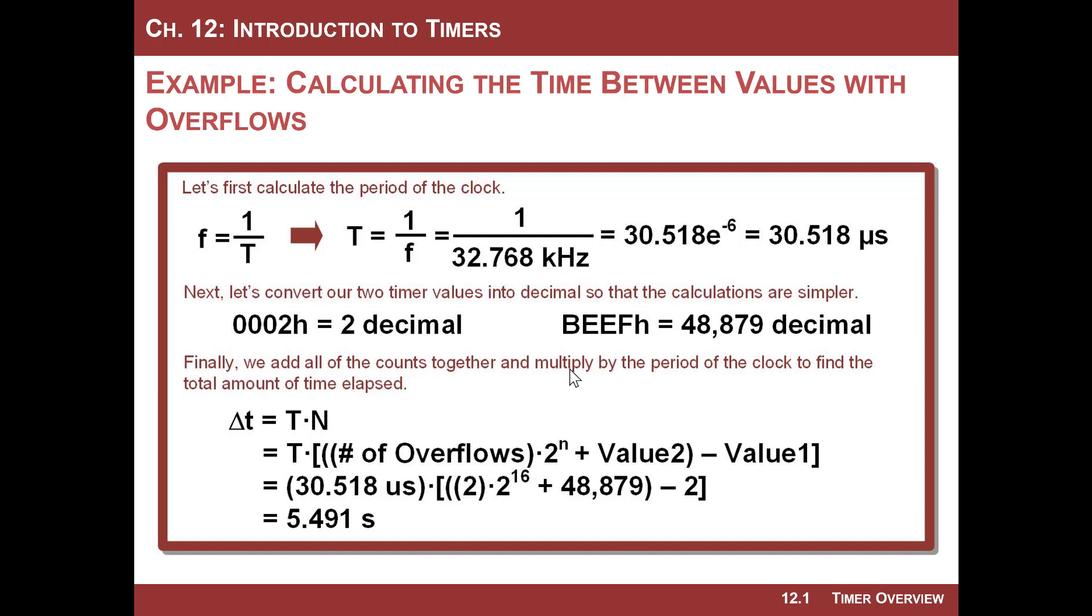And now let's just plunk everything in. It's a 16-bit counter. So we're going to have two overflows multiplied by two to the 16. That gives me the total number of counts in two overflows. I'm going to go ahead and add value2, which is BEEFh, which was 48,879. That gets me all the way from zero, two overflows, and then my last value. And then we've got to subtract off the starting value. So the minus 2. That is the whole number of counts that happened in this situation. Multiply that by the period of the clock, which is 30 microseconds. And voila, you got 5.491 seconds.